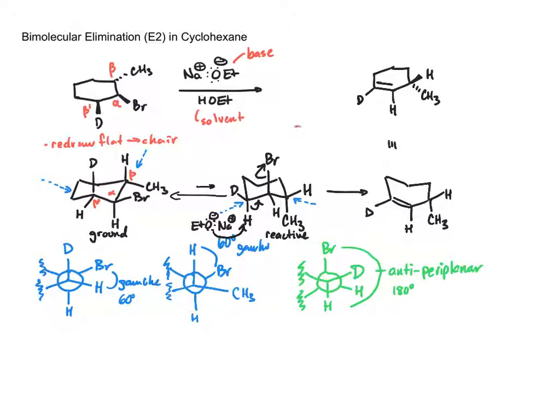As a consequence of the E2 mechanism we can write a note: the alkene always forms between an alpha and beta carbon. In this case it just happened to be alpha and beta prime.